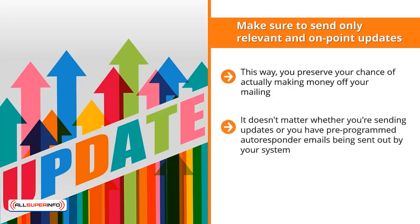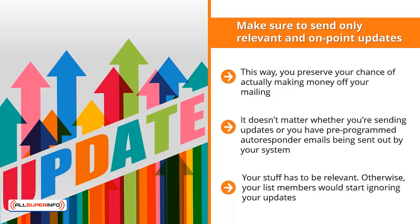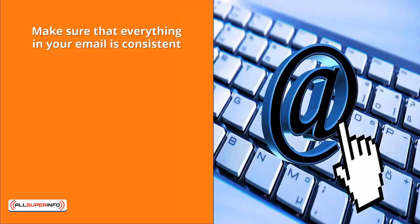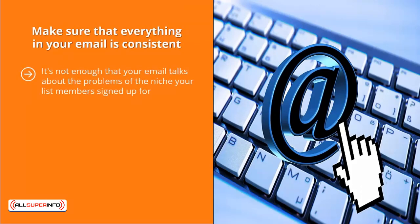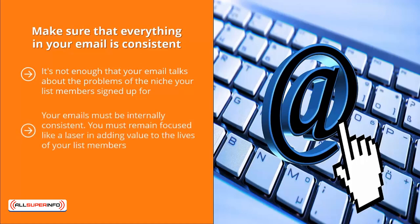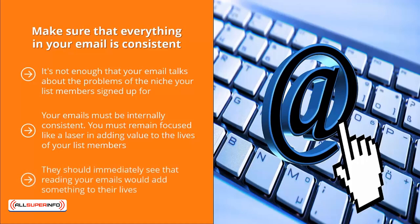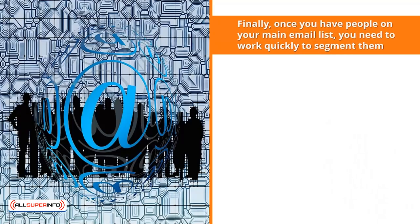It doesn't matter whether you're sending updates or pre-programmed autoresponder emails — your content has to be relevant, otherwise list members will start ignoring your updates. Make sure everything in your email is consistent. It's not enough that your email talks about the problems of the niche your list members signed up for; your emails must be internally consistent. Remain focused like a laser on adding value to the lives of your list members so they immediately see that reading your emails benefits them.